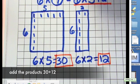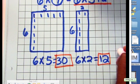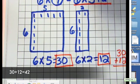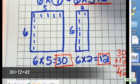And now we're just simply going to add them together to figure out what six times seven equals. So 30 plus 12. And that gives me 0 plus 2 is 2, 3 plus 1 is 4. 42.